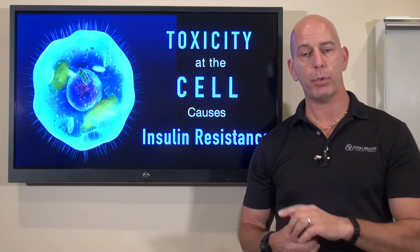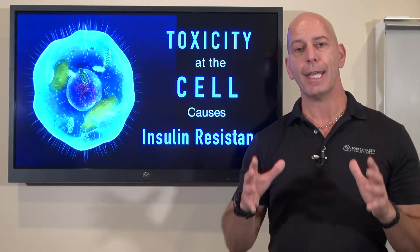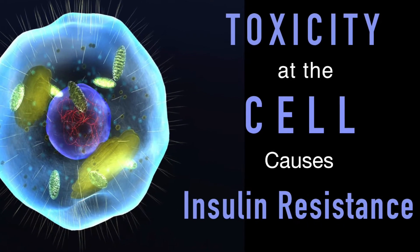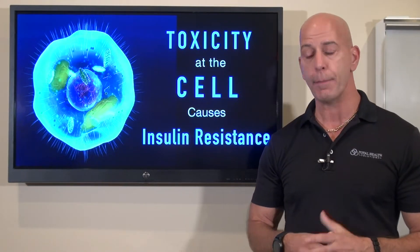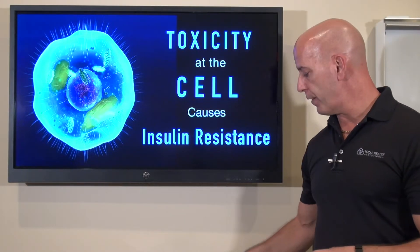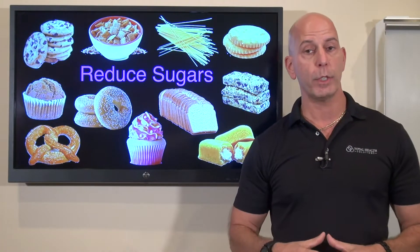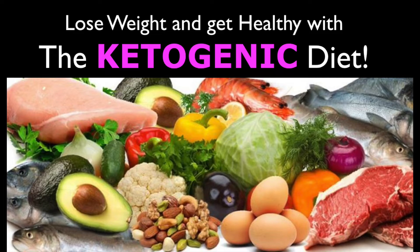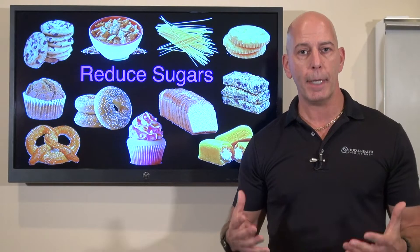Anything that causes inflammation in your body, such as toxins, is going to lead to insulin resistance. So let's dive in. Number one: we recommend you reduce sugars, or eliminate them if you can. We talk a lot about the keto diet — I've got some videos on that — but you want to reduce or eliminate sugar.